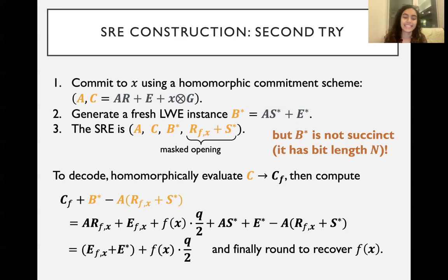However, this doesn't work either, because this is not succinct. B* has the same size as C_f. Remember, the reason why we got succinctness in the first try was because we weren't giving C_f - we're just giving C and then asking the evaluator to do homomorphic evaluation. In this case, because B* is actually just as big as C_f, it just gets added to it. It has bit length N and we no longer have succinctness.